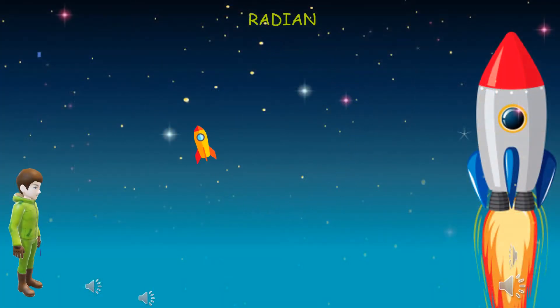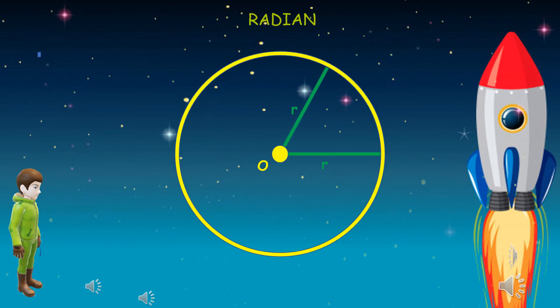Now consider a rocket that rotates in a circular path, as shown below. This circular path has a center at point O, and R shows the radius of the circular path.